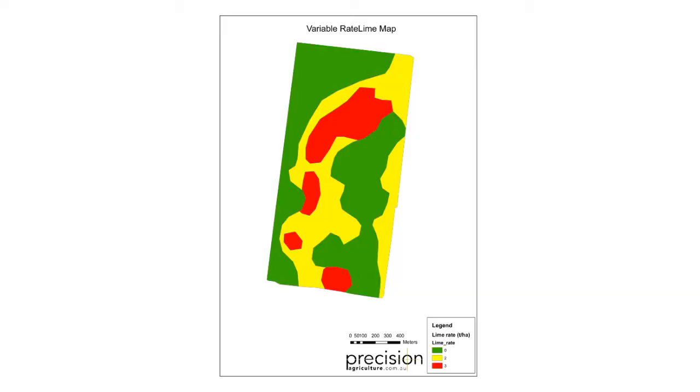It varies from paddock to paddock. Most paddocks are around 15-25% saving in lime, but we have had examples where we've had up to 85% saving in lime.